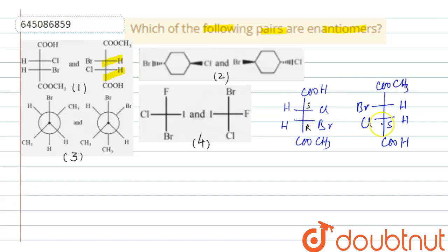So it is coming S. And here, bromine highest priority group, then this one, then this one. It is coming S, means it is R. Therefore, the configuration of this carbon coincides with this, and this carbon coincides with this.